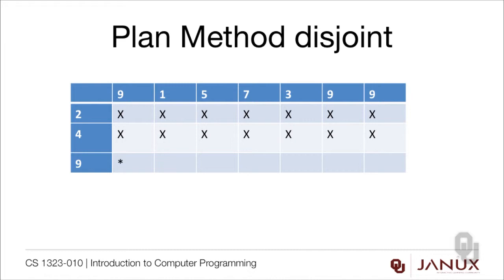The plan for disjoint is to step through the second array and compare every element against each element in the first array. We compare 2 to 9, then 2 to 1, then 2 to 5, then 2 to 7 — marching across the first array. Then we move to the second element of second, which is 4, and compare 4 to 9, 4 to 1, 4 to 5, 4 to 7, and so on. This is a rectangular pattern. When we hit 9 and compare it to 9, we know they're not disjoint and we return false. A return mid-loop doesn't interrupt the pattern structure — this is still definitively a rectangular pattern.